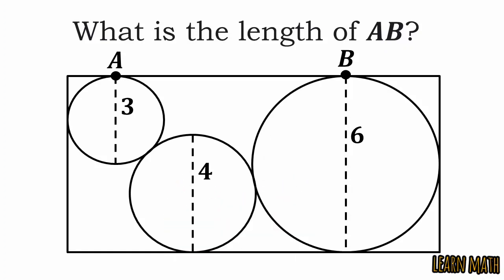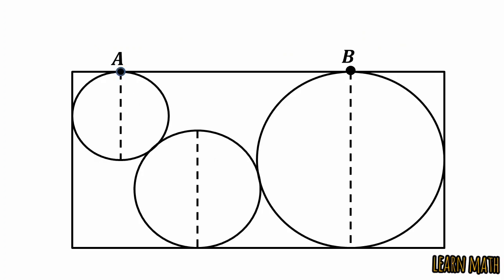Let's begin to solve the question. In this question there are three circles inside a rectangle and we have to find the length of AB. Let the first circle be C1 and the diameter of this circle is 3.